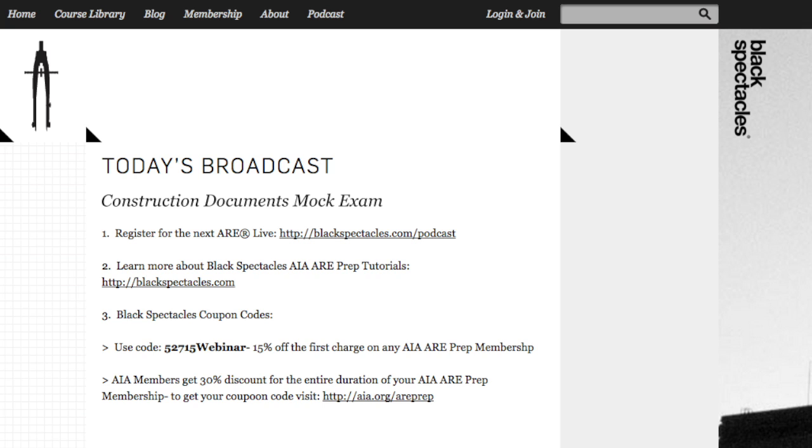And to learn more about our AIA ARE prep curriculum, go to blackspectacles.com. We'll include a link in the show notes. And for those of you who are ready and want to go ahead and get busy preparing for the ARE, you can use a 15% coupon off the first charge on any AIA ARE prep membership with code 52715WEBINAR. That will expire on June 15th.